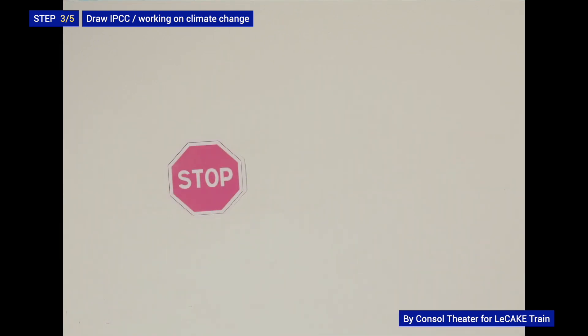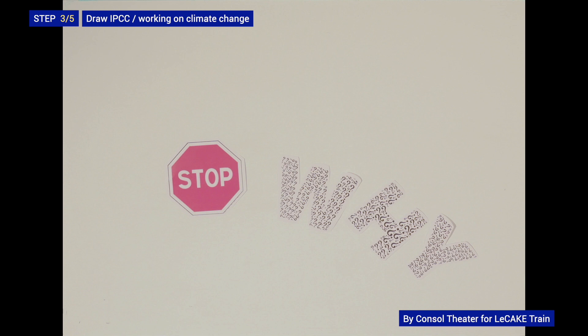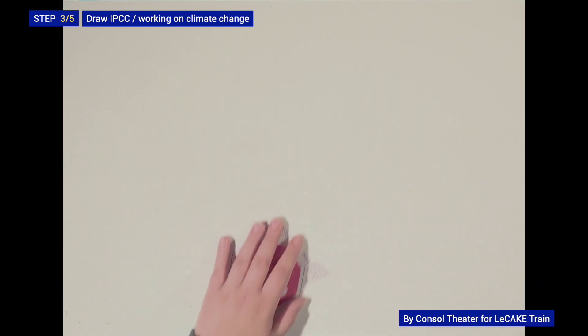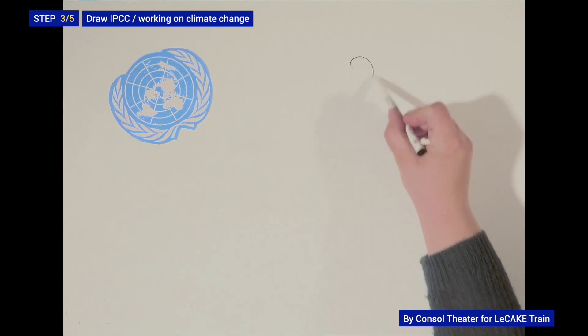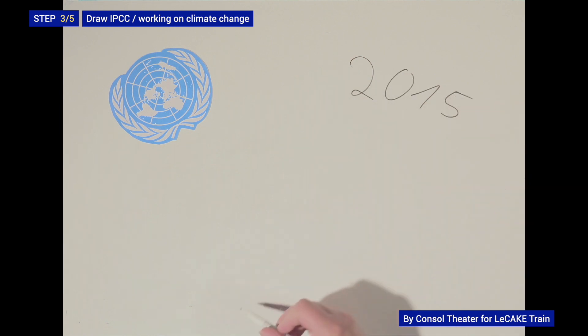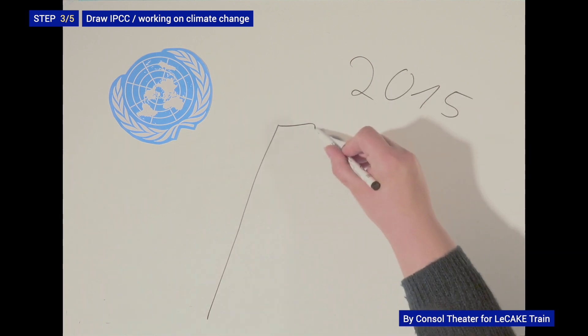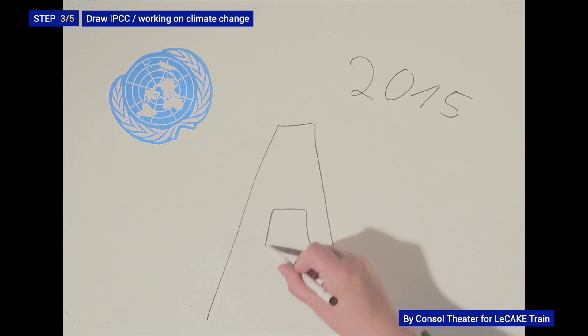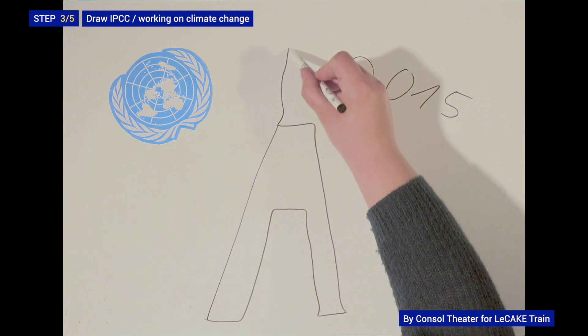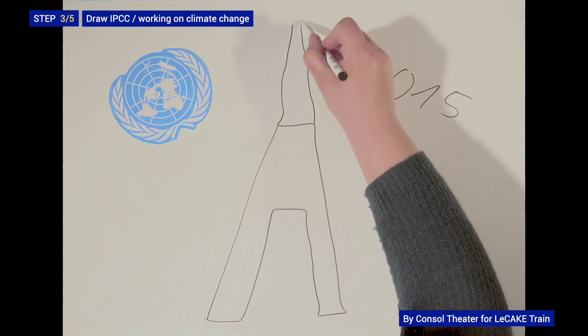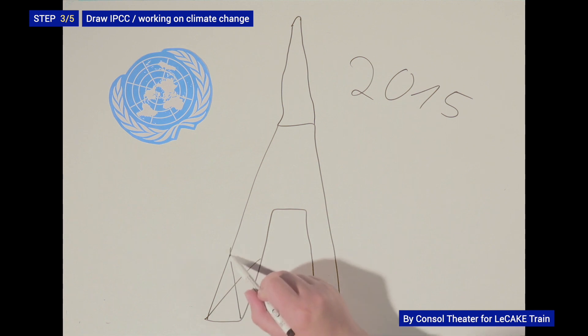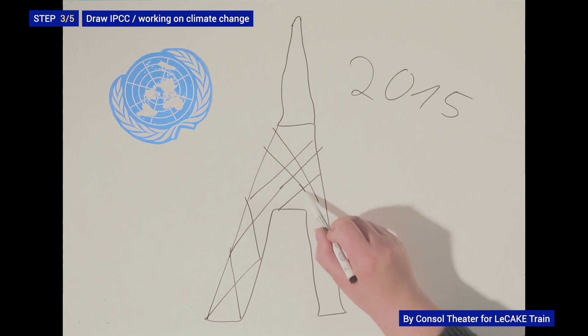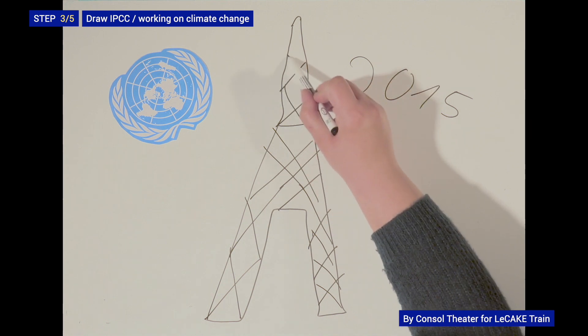But wait a minute. What even is the 1.5 degree goal? It is mentioned in many climate-related discussions nowadays. But what does it even mean? To understand that we need to take a look a bit back further, to the United Nations Climate Conference in 2015. Back then, 196 countries negotiated the so-called Paris Agreement. A treaty in which they pledged themselves to take measurements to limit the average warming of the planet. The official goal is, as quoted, well under 2 degrees. But 1.5 degrees as a boundary not to be crossed is named as well.